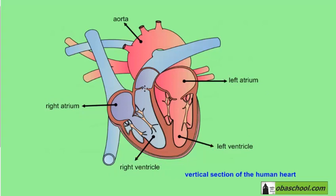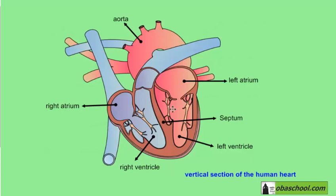The right parts and the left parts of the heart do not meet. The blood that goes into the right part does not mix with the blood that goes into the left part, because both parts are separated by a septum. The right and left atrium or ventricle do not meet.